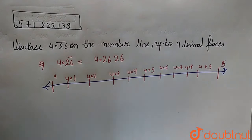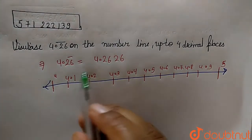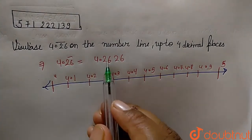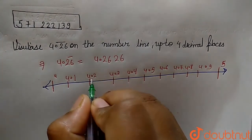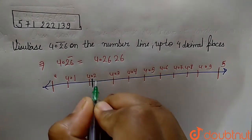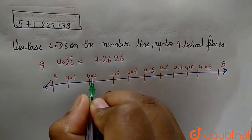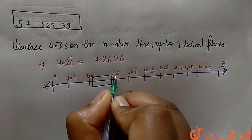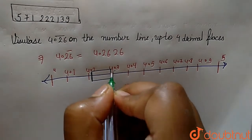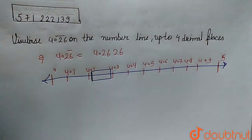Now we have to find the value for 4.26. Since 4.26 bar starts with 4.2, it will come between 4.2 and 4.3 on this number line.